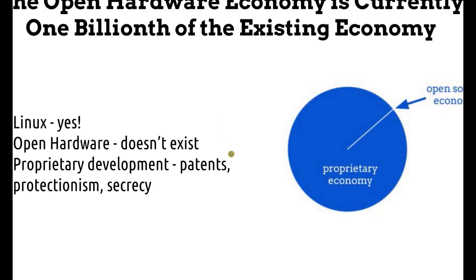Linux is a major milestone in human history — most of the internet runs on it. The backbone backend software is Linux, Apache servers, and other open source programs that make the internet run, or Android. Open hardware, on the other hand, is one billionth of the existing economy — currently about $100 million of a market compared to the overall global $100 trillion economy.